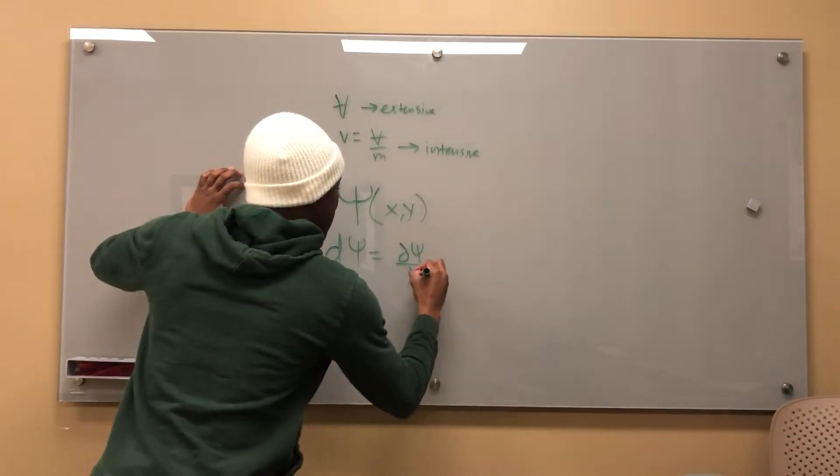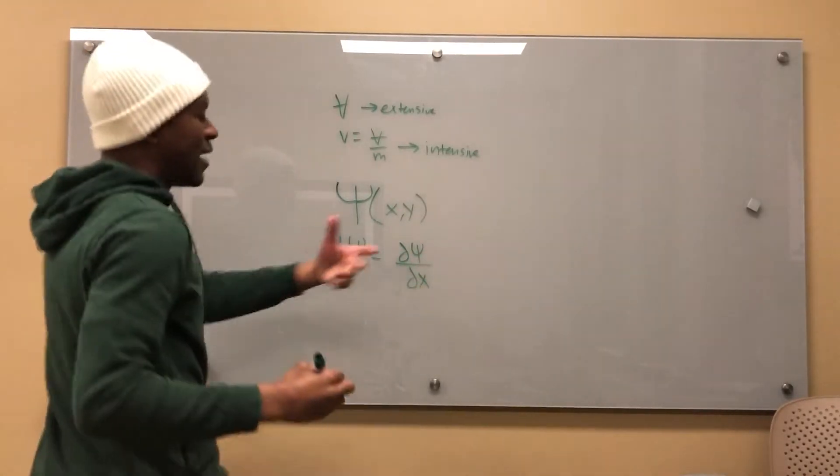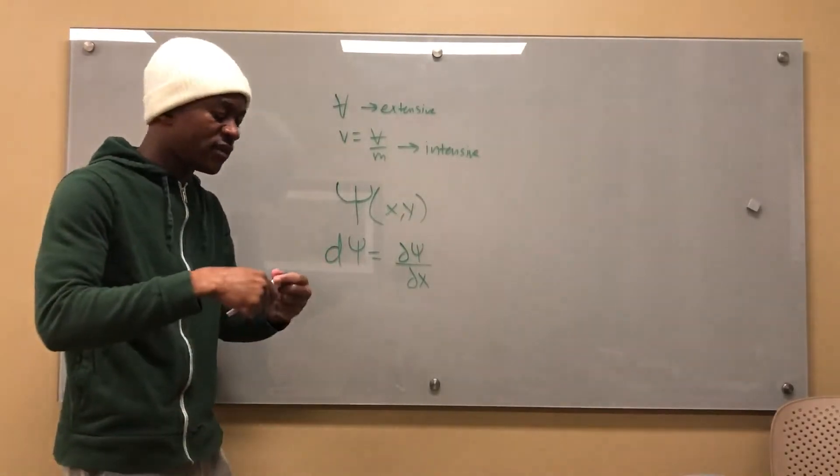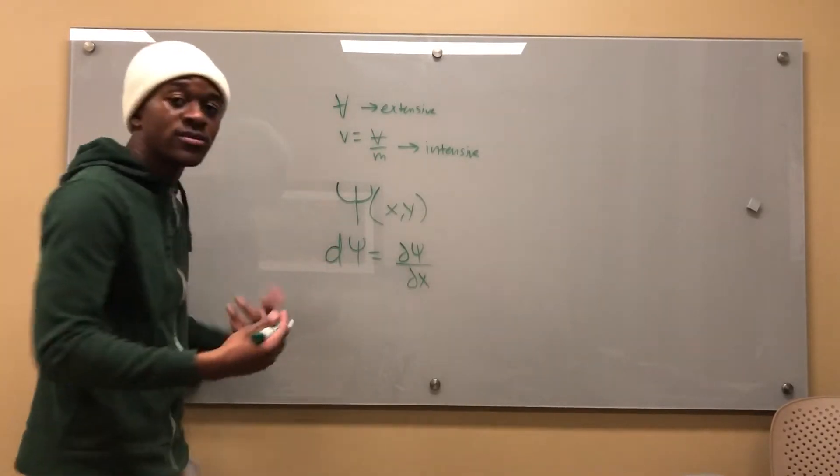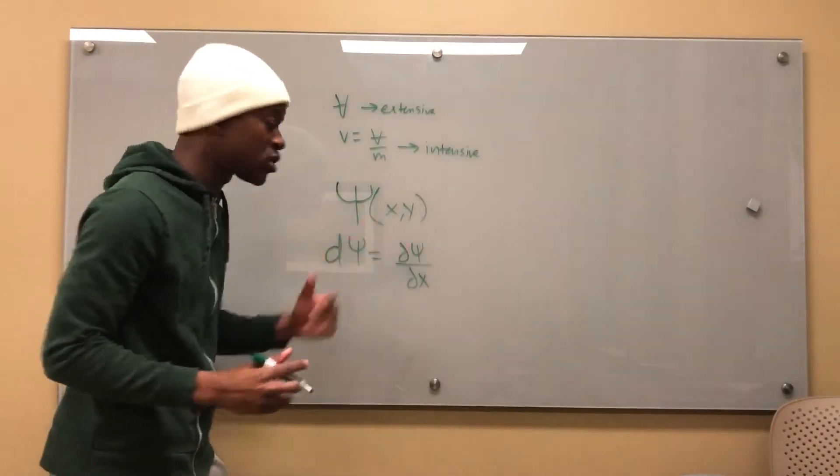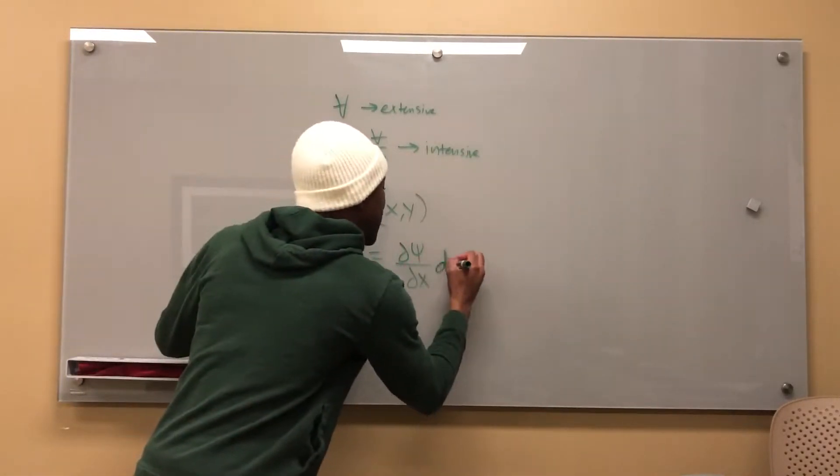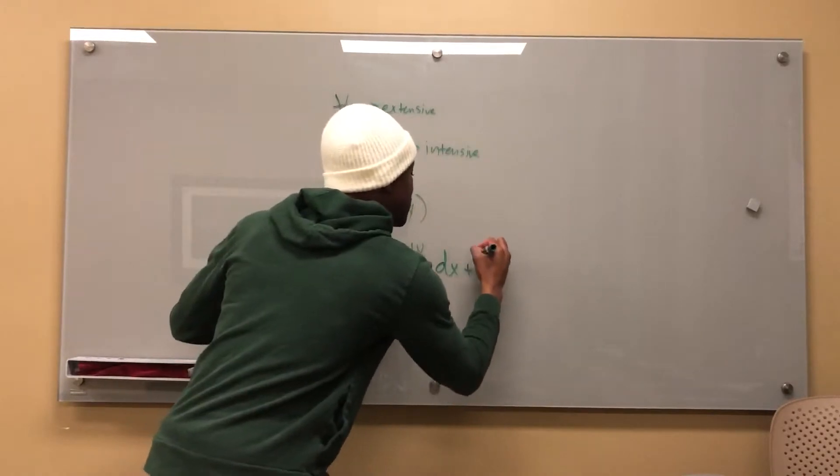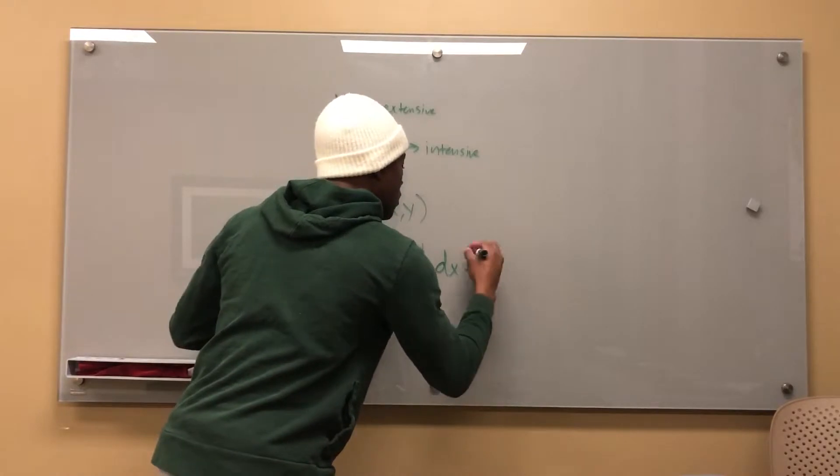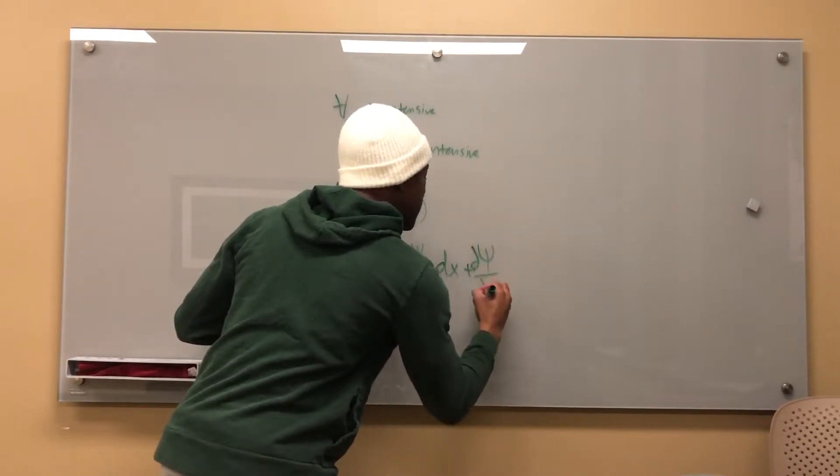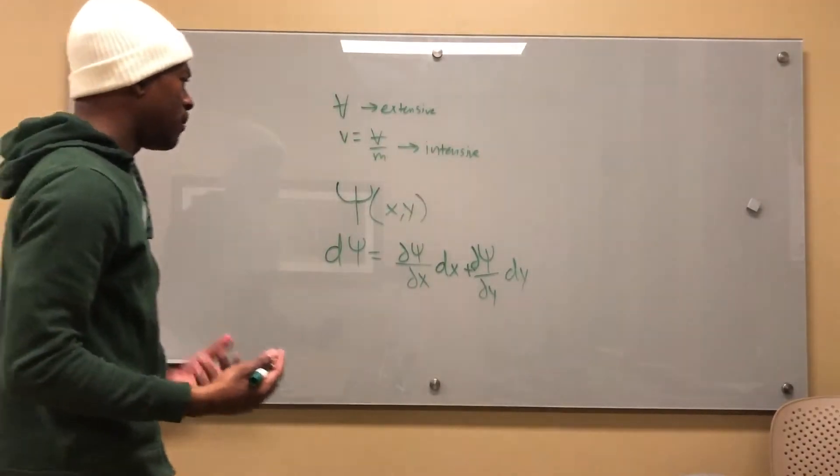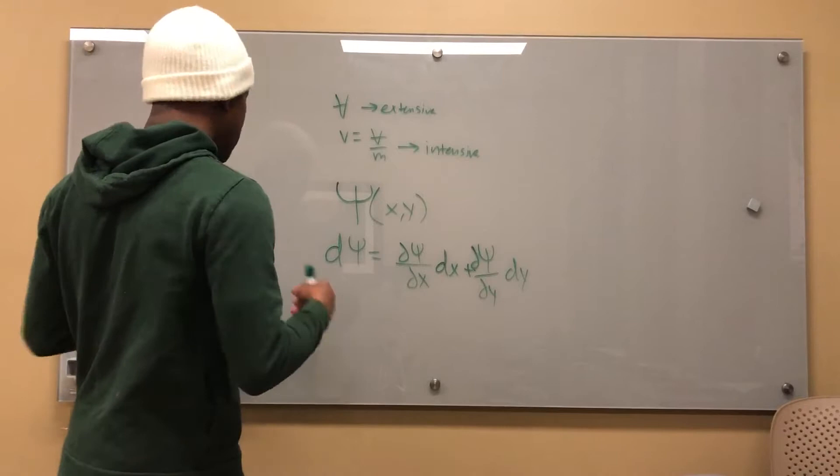I can say that the derivative of psi is equal to del psi del x. When I say del and del, that means it's a partial derivative. Now this d is a whole derivative. So I'm saying that the whole derivative of psi is equal to del psi del x. Those are partial derivatives times dx plus del psi del y dy.